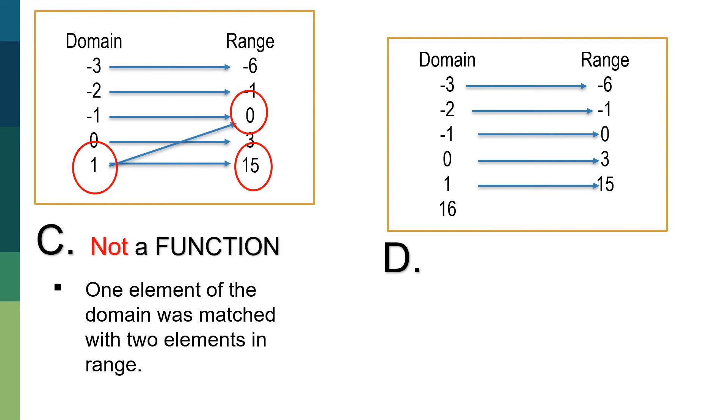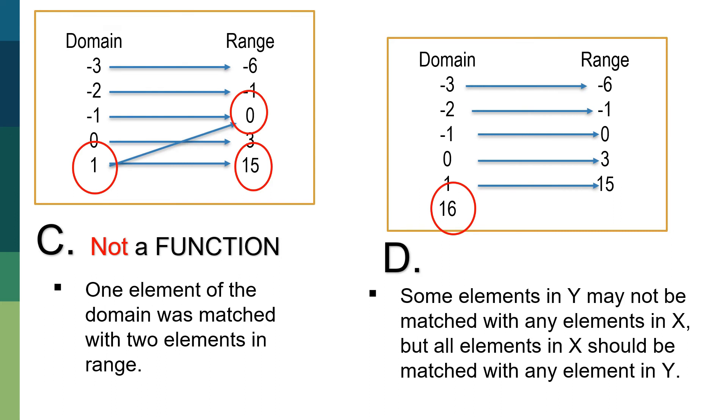On the other hand, for our next example, as you can see, one of the elements of the domain, which is 16, was not paired with any element in the range. So some elements in Y, please remember, may not be matched with any elements in X, but all elements in X should be matched with any element in Y. So meaning to say, 16 here, as part of the element of the domain, should be matched with an element of the Y. But since it's not, therefore we can classify this as not a function.